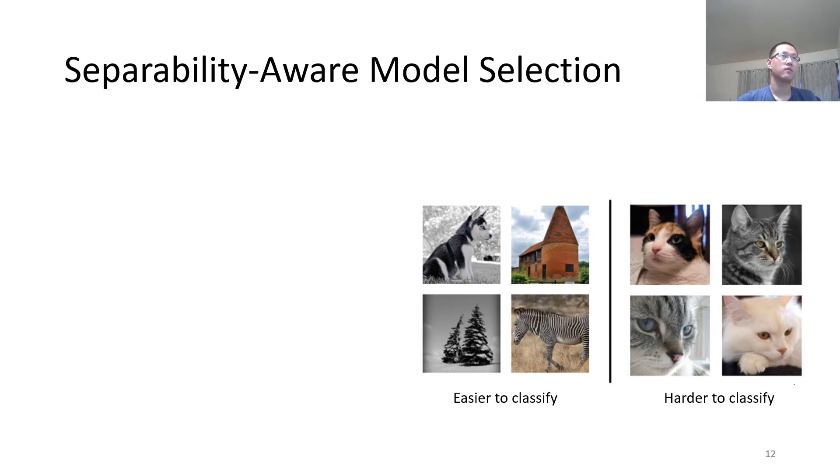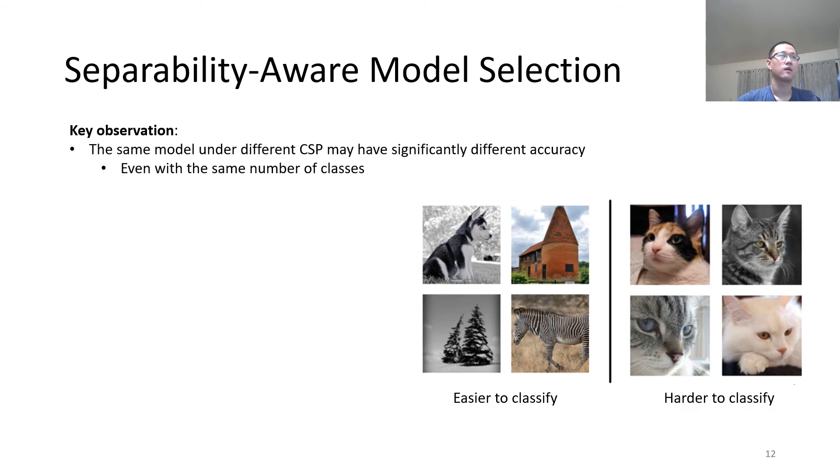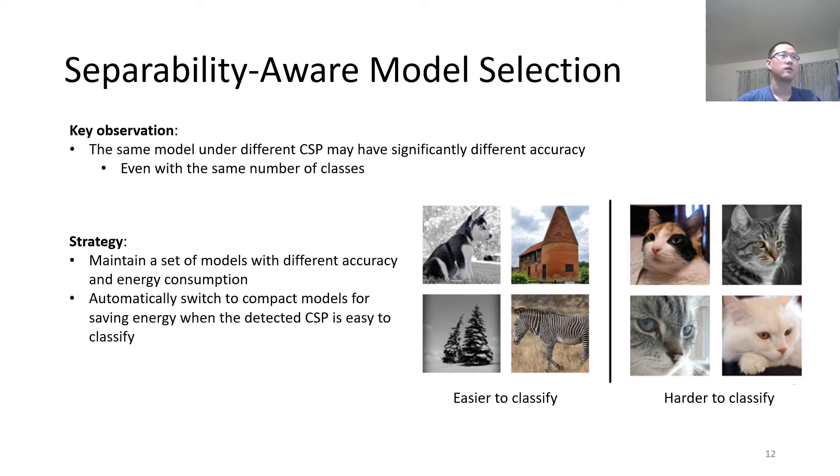Now, let's talk about the third component in Palin, the separability-aware model selection. Remember that we discussed visual separability earlier. Even with the same number of classes, one group of classes is easy to classify while the other one is harder. Our key observation is that the same model on different class skew profiles may have significantly different accuracy even with the same number of classes. Our strategy is to maintain a set of models with different accuracy and energy consumption. Then, we automatically switch to compact models for saving energy when the detected class skew profile is easy to classify.